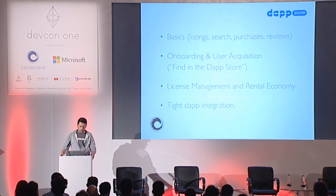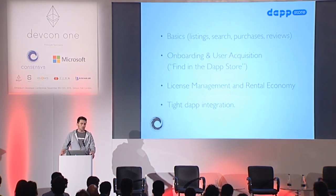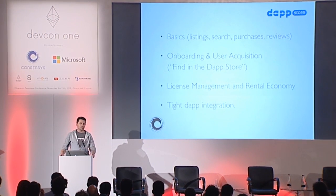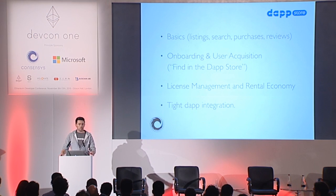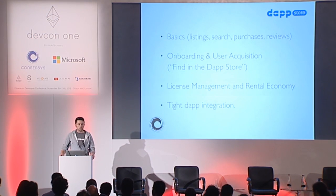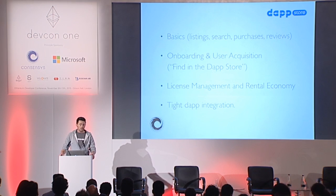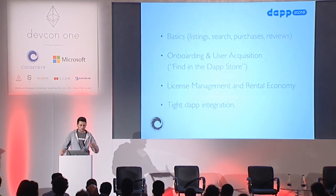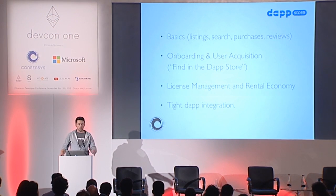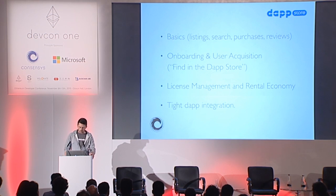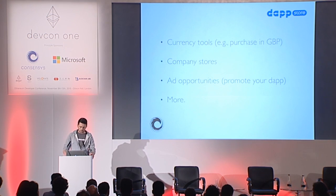A feature might be tight Dapp integration. So when you have this license economy, your Dapp can check the license registry and see: does this user have a license for my Dapp? And if so, you either let them use the app or you don't. So you can enforce access controls across the whole network.